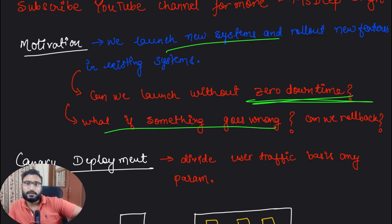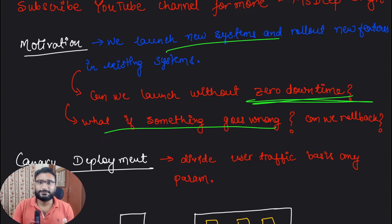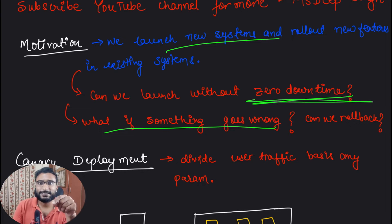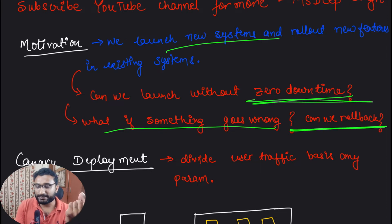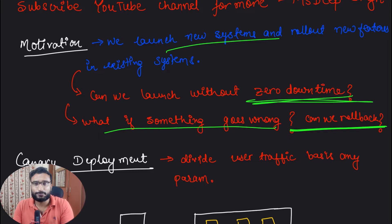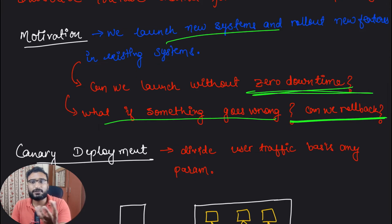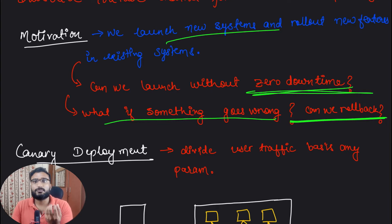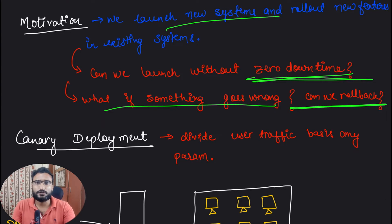And what if something goes wrong? It can happen that an issue was not caught in earlier testing. There could be a possibility that something goes wrong and we need to mitigate quickly — to roll back the changes to what we had earlier in place. Some changes are already deployed in production; we launched new changes, figured out there are issues, and we can't serve customers. So can we roll back? That is the main motivation.